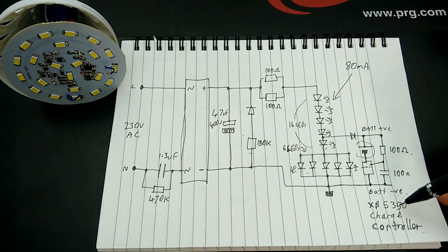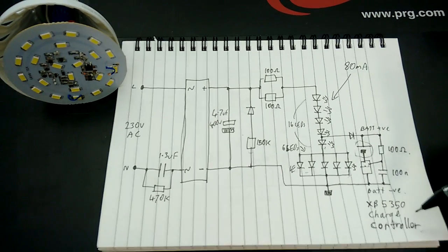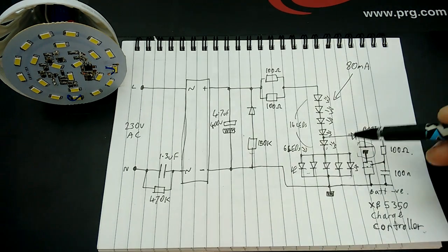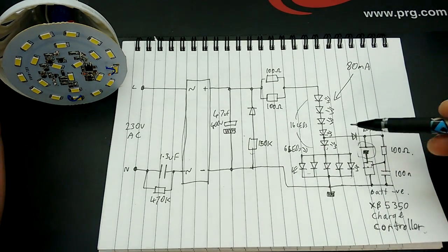And it's a fairly standard, it's an XB5350 type chip. I think that's the closest I could find to it. And that is the basic lamp and charging circuit.